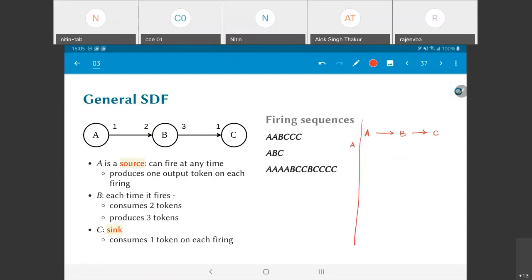After step one, after the first A, I'm going to end up with one token on this edge. After the second A, two tokens on the edge. Third A, three tokens. Fourth A, four tokens.